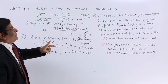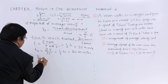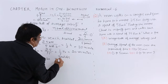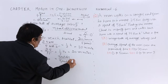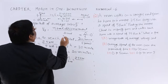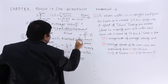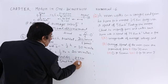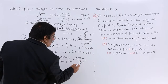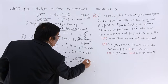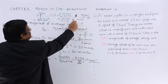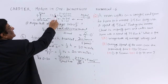Average speed from 0 to 30 minutes equals total distance divided by total time. Total distance is 2.5 km and total time is 30 minutes = 30/60 hours. Solving: 2.5 divided by (30/60) = 2.5 × (60/30) = 5 km/hr. So the average speed from 0 to 30 minutes is 5 km/hr.